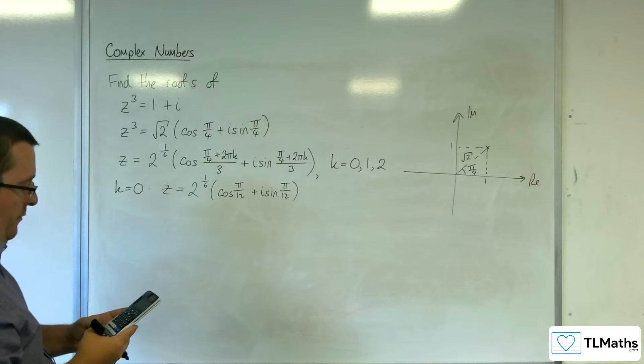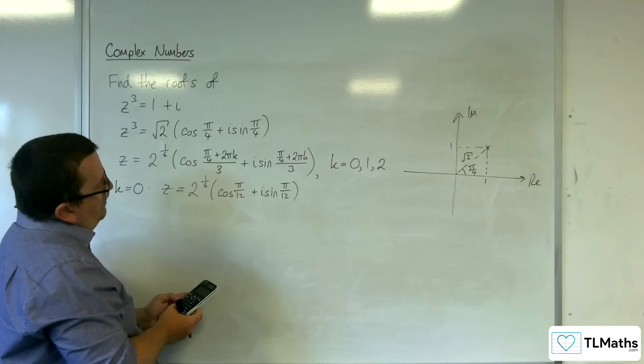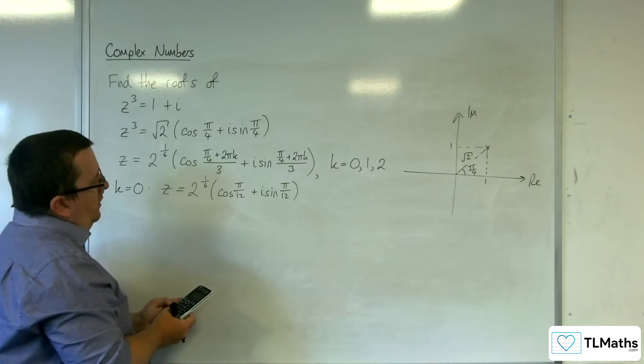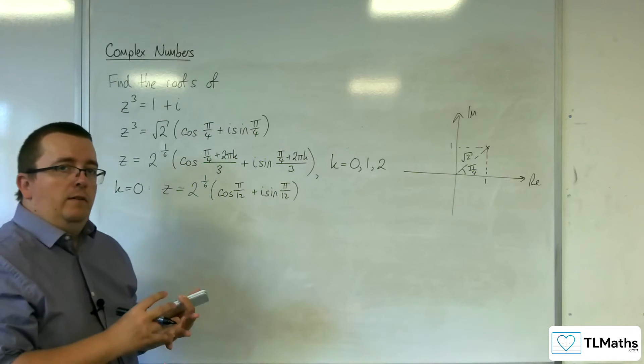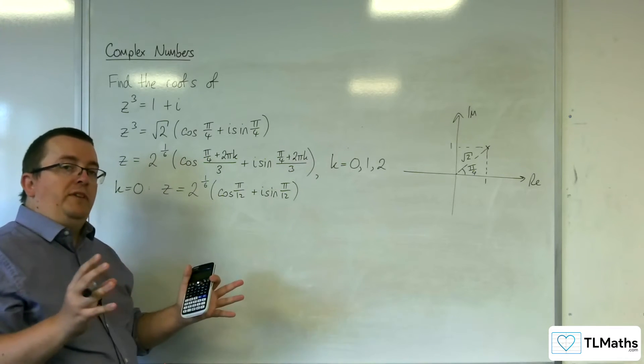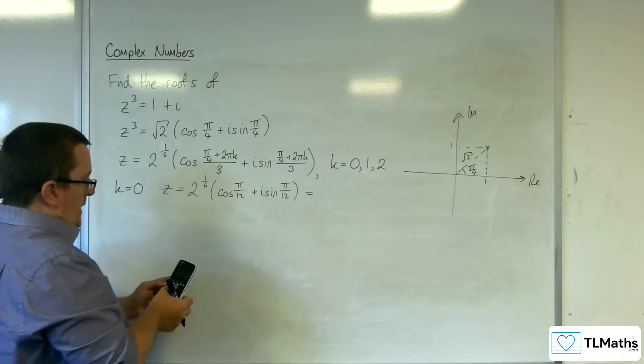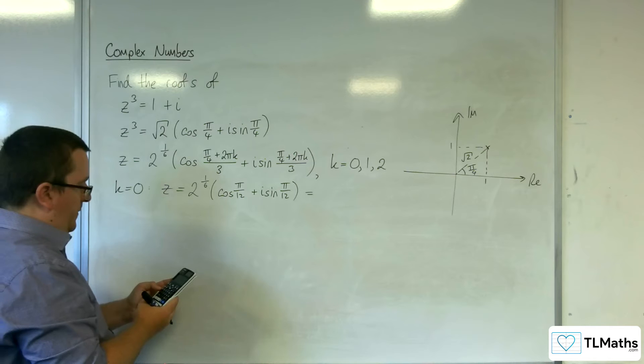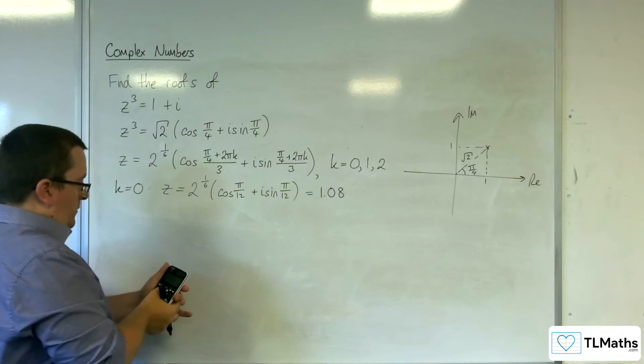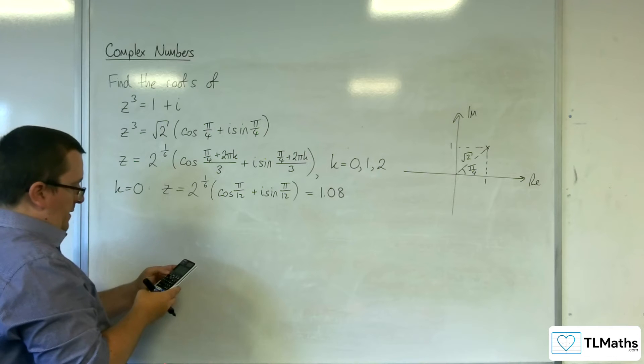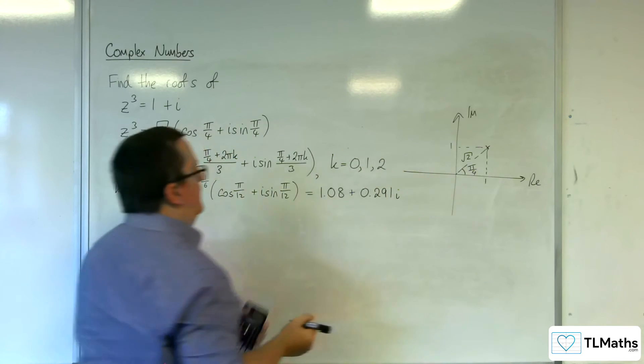Now cosine of pi over 12 is root 6 plus root 2 over 4. I think it would probably be best if I just write it to 3 significant figures. So we've got 2 to the power of 1 sixth times cosine of pi over 12, we're getting 1.08, and then 2 to the power of 1 sixth times sine of pi over 12, we've got plus 0.291i.